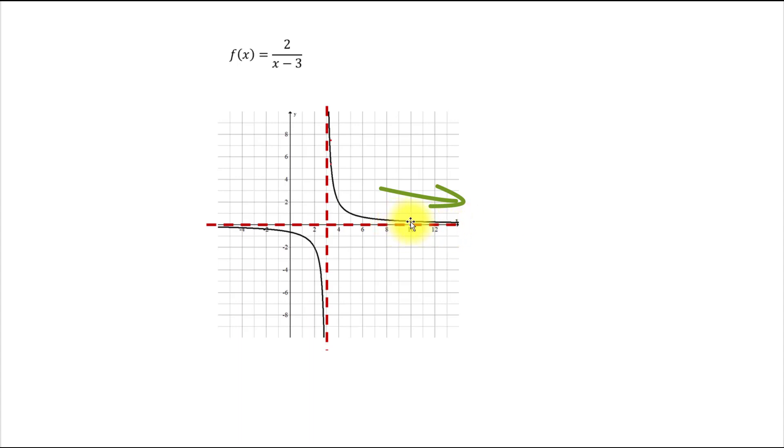But what happens to the y values at the same time? We can see that graph goes down. It means that y values are decreasing. But at the same time, we know it's not going to cross the value y equals zero. Well, that means that as x approaches infinity, y approaches zero. And we can even add from above.